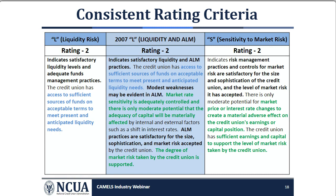An L rating of two indicates satisfactory liquidity levels and funds management practices, with access to sufficient sources of funds on acceptable terms to meet present and anticipated liquidity needs. An S rating of two indicates risk management practices and controls for market risk are satisfactory for the credit union's size and sophistication, with only moderate potential for market price or interest rate changes to create a material adverse effect on earnings, performance, or capital position.